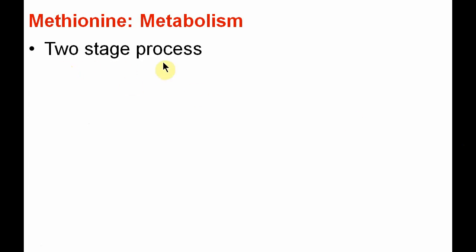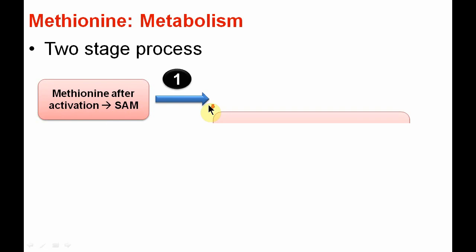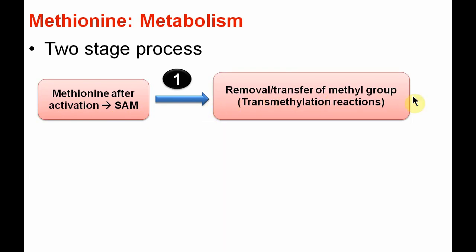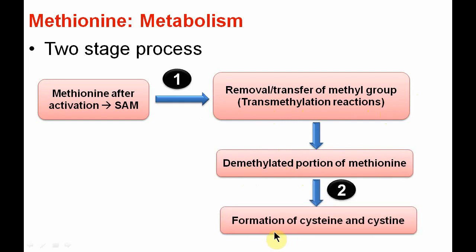Methionine is metabolized in our body by a two-stage process. In stage one, methionine after activation is converted to S-adenosyl methionine (SAM), and there is removal or transfer of the methyl group from methionine. These reactions are called transmethylation reactions. The demethylated portion of methionine then undergoes the stage two process for the formation of cysteine and cystine.